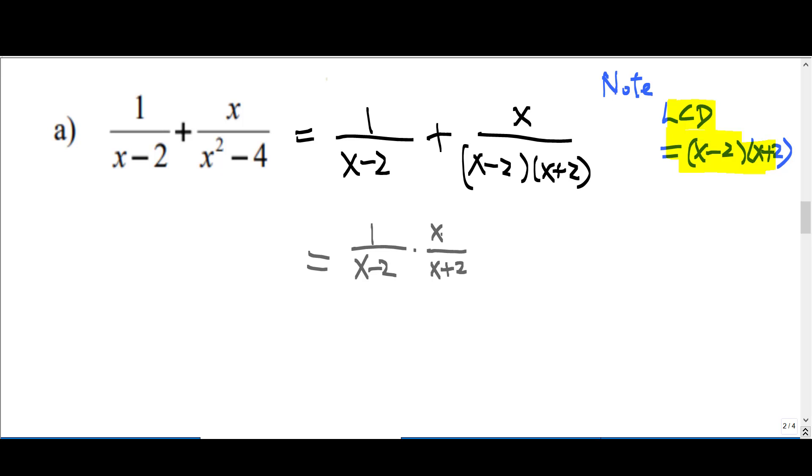And multiply by x plus 2 in both numerator and denominator, so you are actually multiplying by 1. Plus x over x minus 2 times x plus 2, which is already the LCD in the denominator.